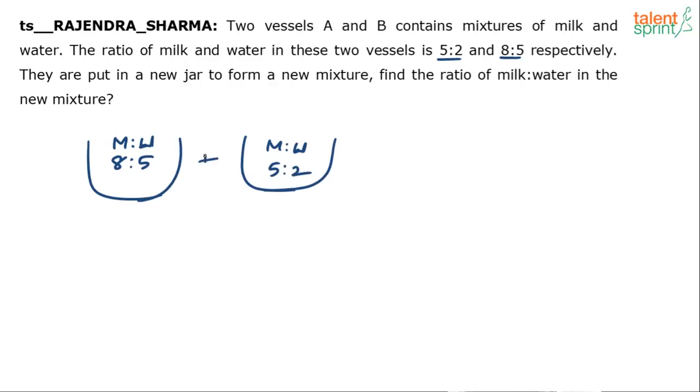These two are mixed together to get a new mixture M':W'. What is that ratio? They are put in a new jar, so contents of both these are put into a new jar to form a new mixture. Find the ratio of milk and water in the new mixture.